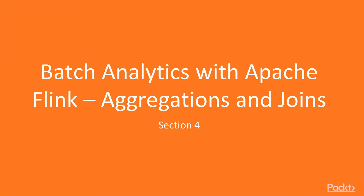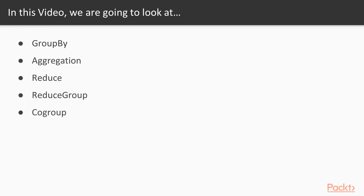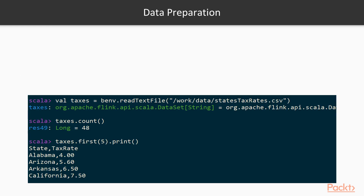Batch Analytics with Apache Flink: Aggregations and Joins. In this video, we are going to look at group by, aggregation, reduce, reduce group, and co-group. First, we will do some data preparation.